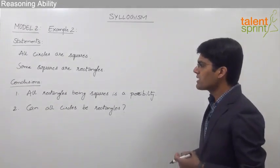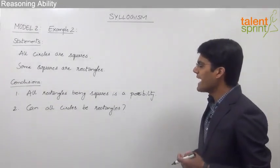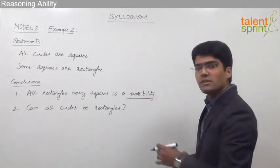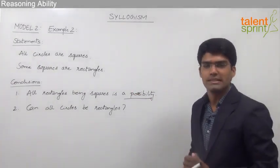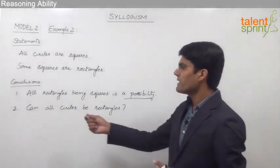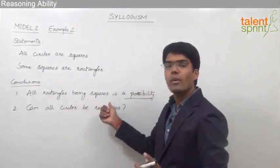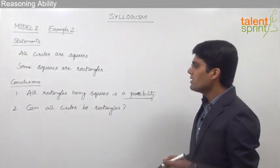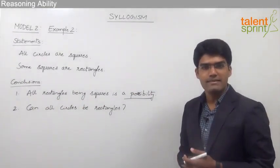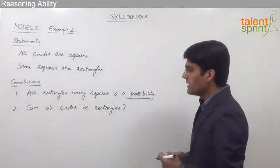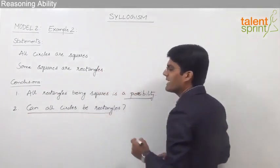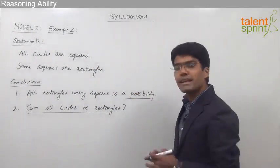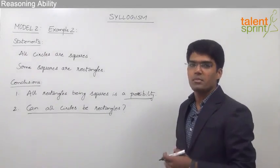The first conclusion is: all rectangles being squares is a possibility. We can see that this conclusion is in the form of a possibility — we just need to check whether all rectangles can be squares or not. The second conclusion is: can all circles be rectangles? This is like a question, not a direct conclusion, but again it is a possibility.